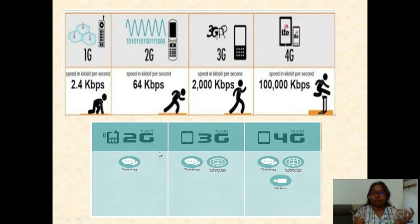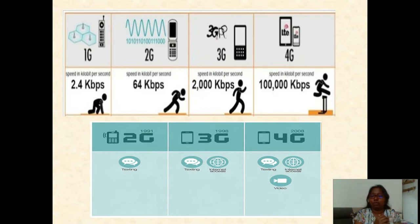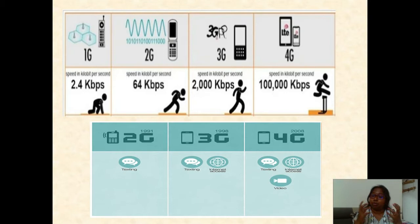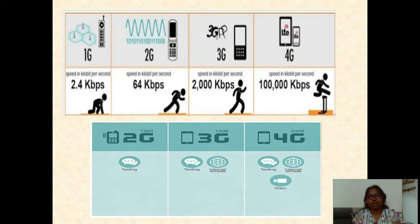If you see the performances: when it was the first generation, it was normal voice calls — it was basically voice-based communication. Coming to the second generation, texting and messages were introduced. Coming to the third generation, we got access to the internet. Now in the fourth generation, most of our work is done on a mobile phone — video, multimedia, texting, internet access, everything.